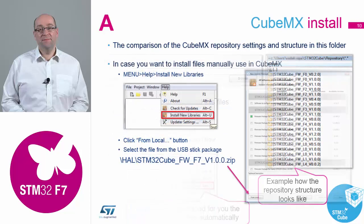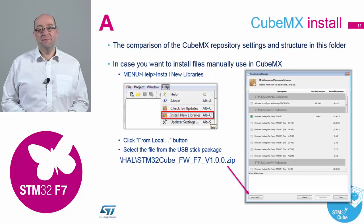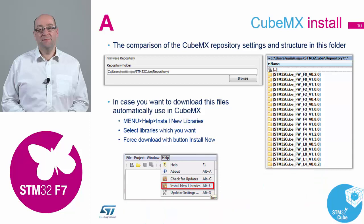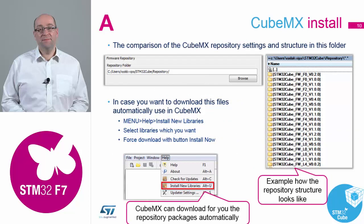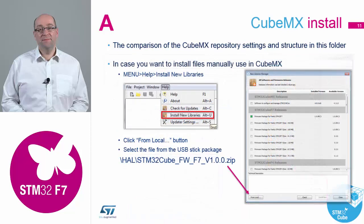To install the libraries, you've got a copy in the zip file that you downloaded off the memory sticks this morning. Go to Help on the toolbar — not the one in the GUI, but Help on the toolbar — and select 'Install New Libraries'. You should get this screen appearing. Your repository path is there: users/your account name/STM32Cube/repository. If you haven't installed any library files, this folder will not exist.